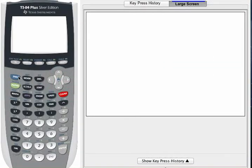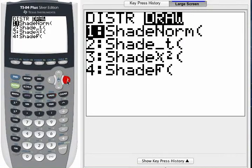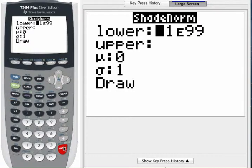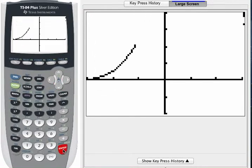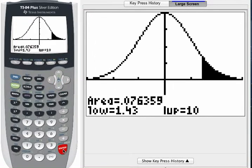So same thing. I've cleared my drawing. Second, variables, over to draw. I press enter. The lower boundary is 1.43 this time. The upper boundary is 10. I'll arrow past the mean and standard deviation, highlight draw.